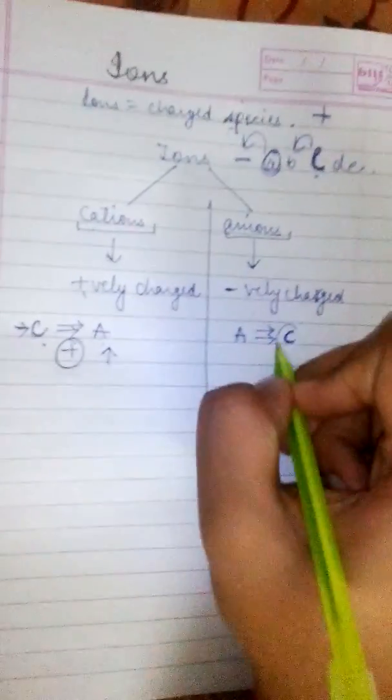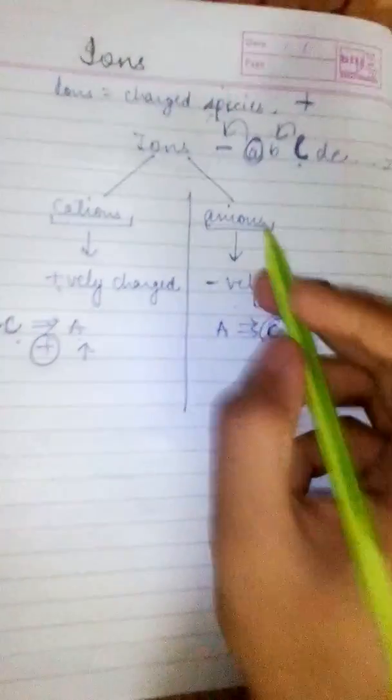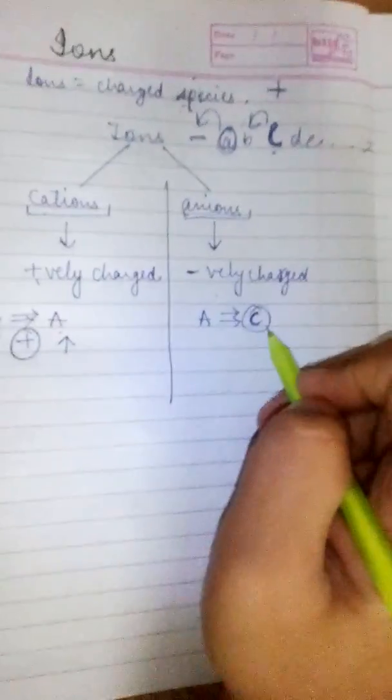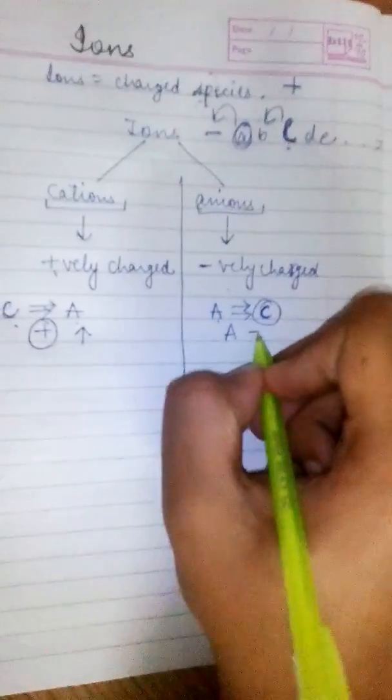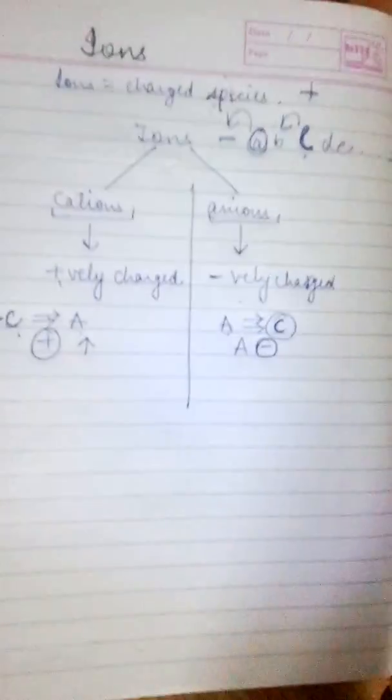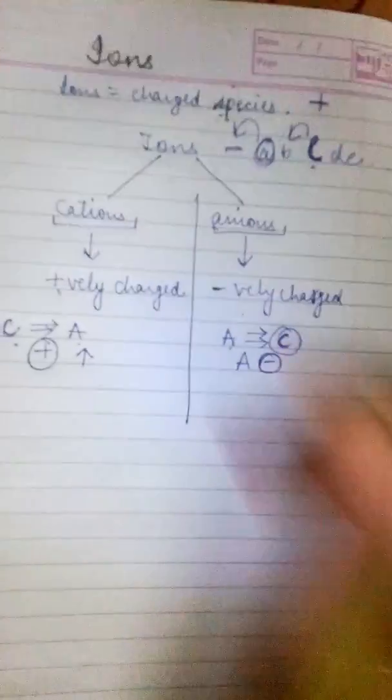And if C in anion is more influential, then A would get degraded. And A would have a negative charge. So this one, the other way.